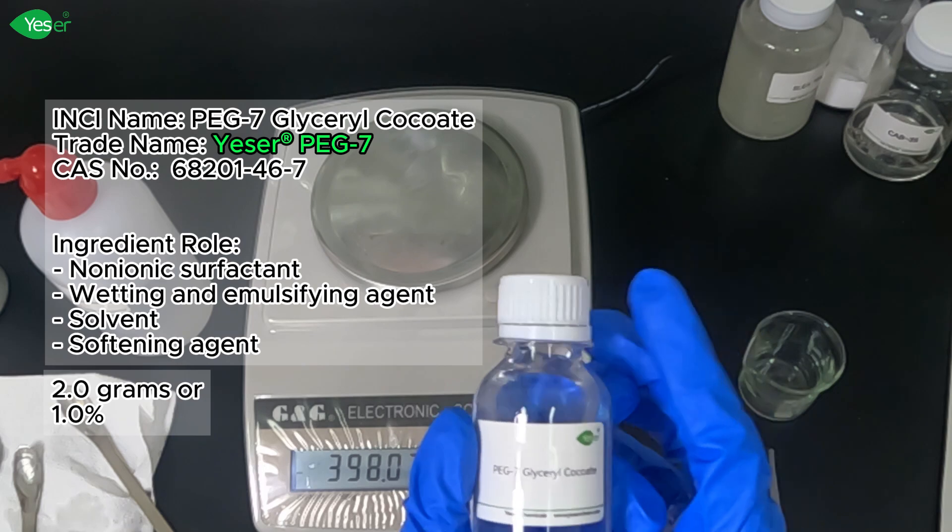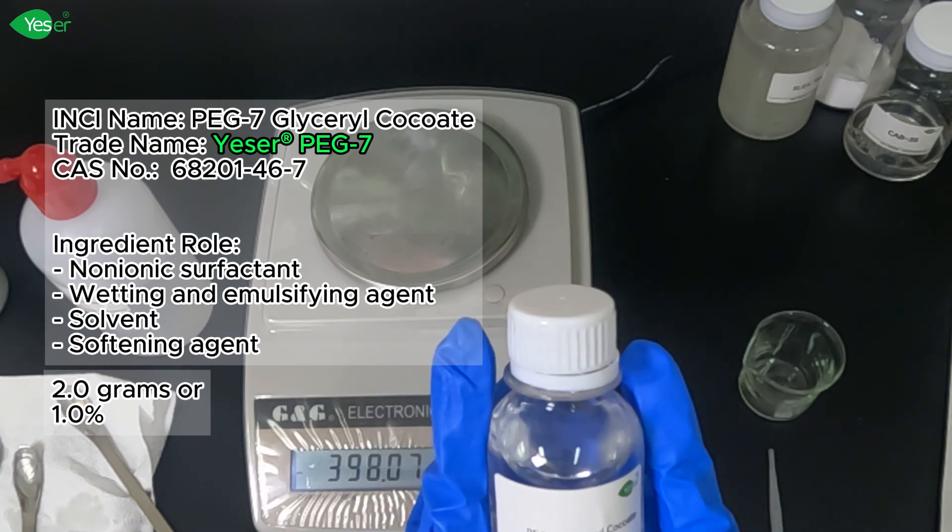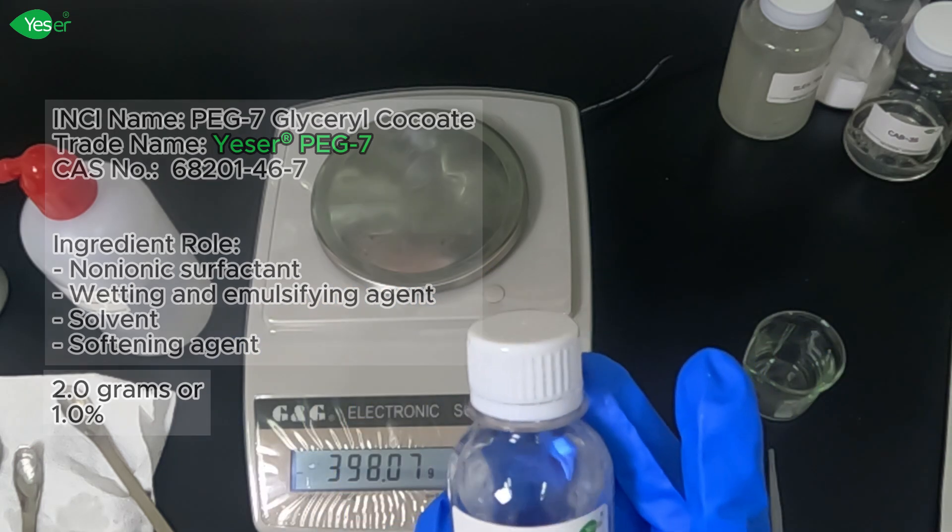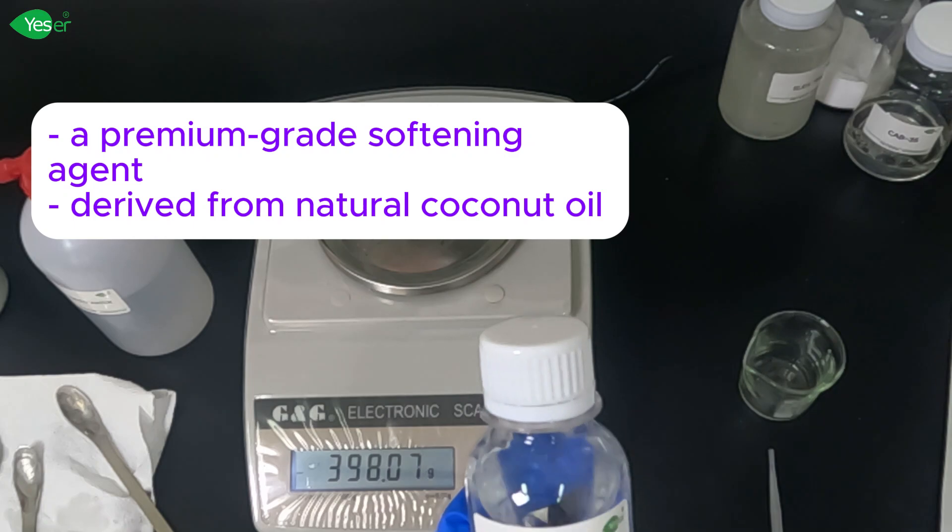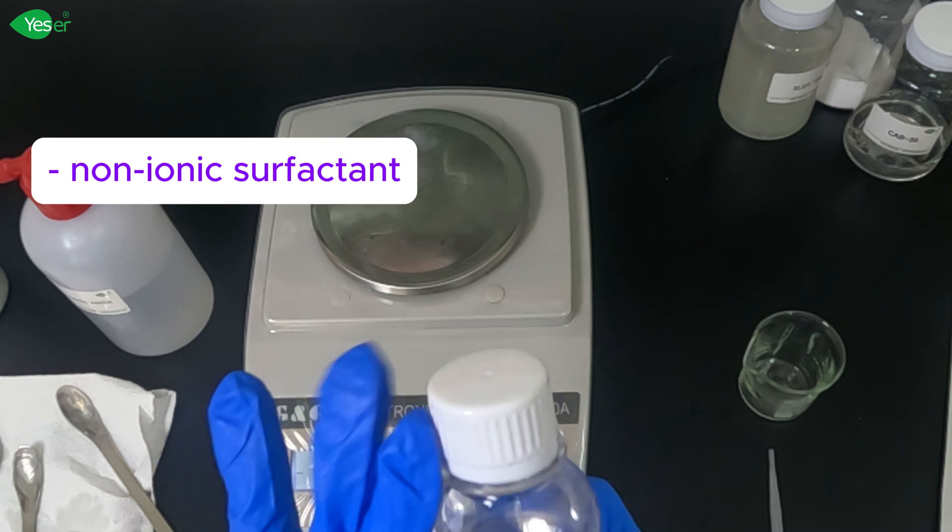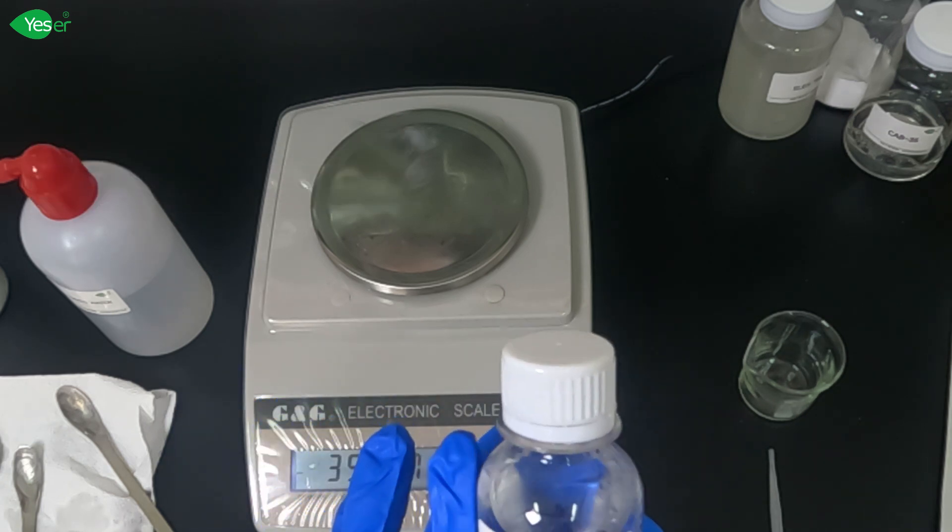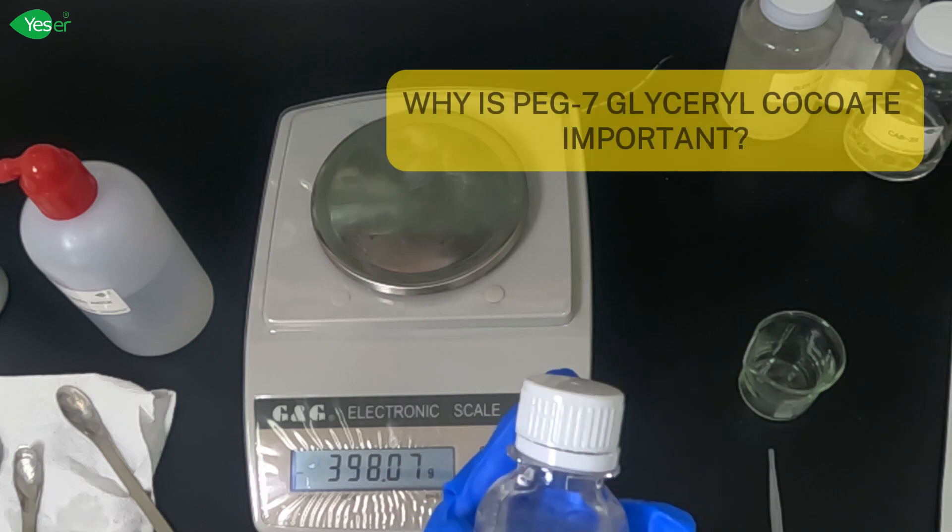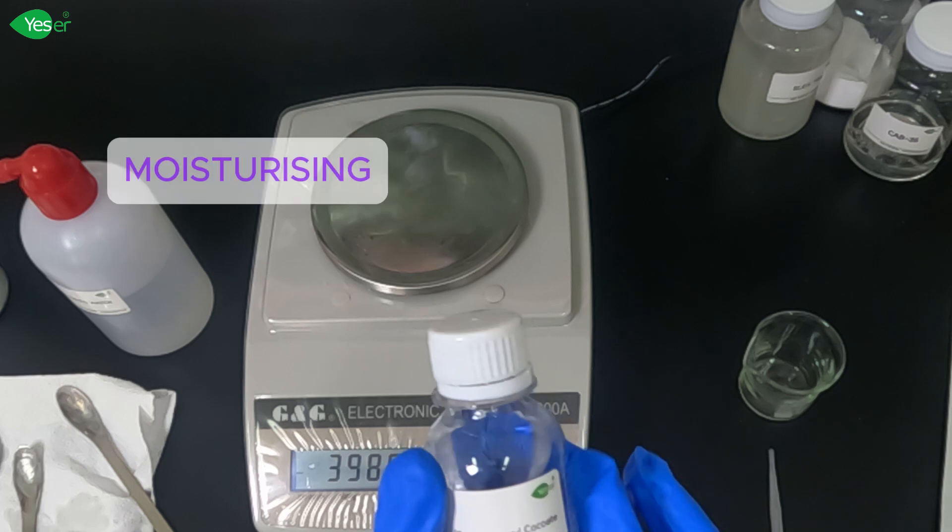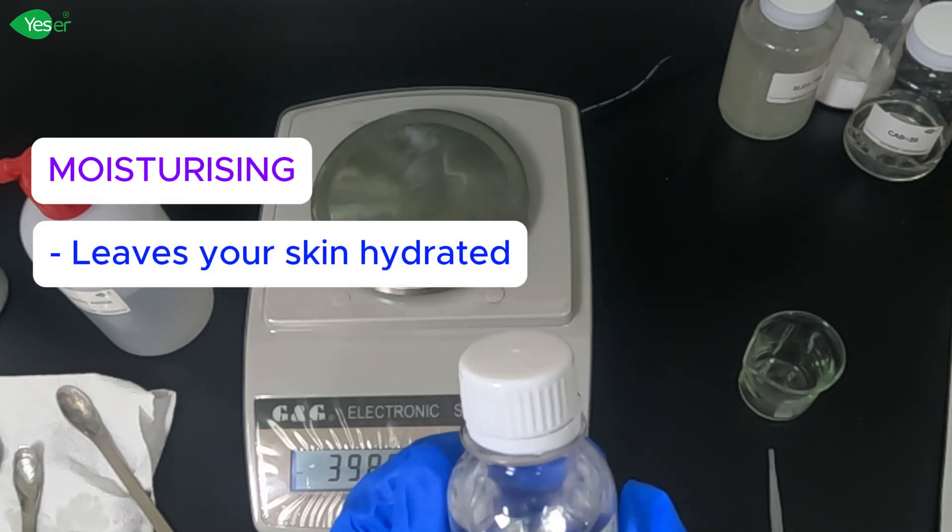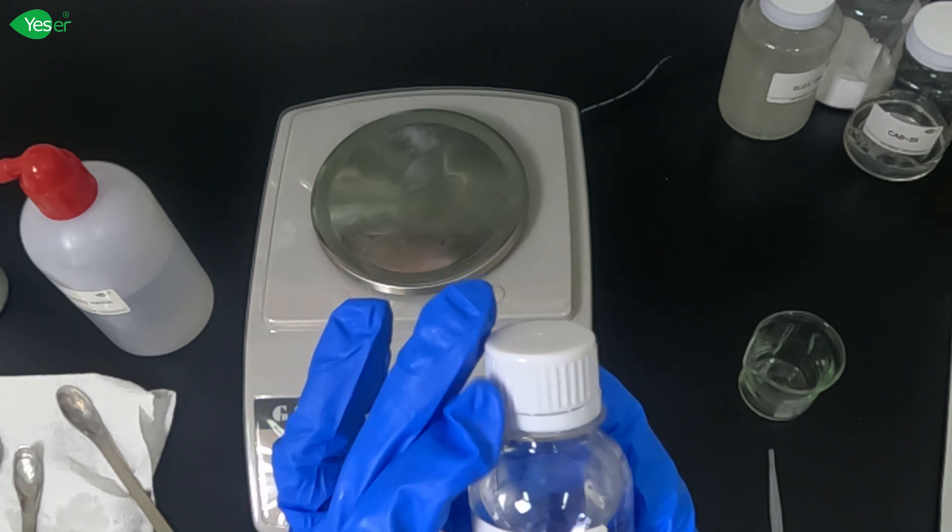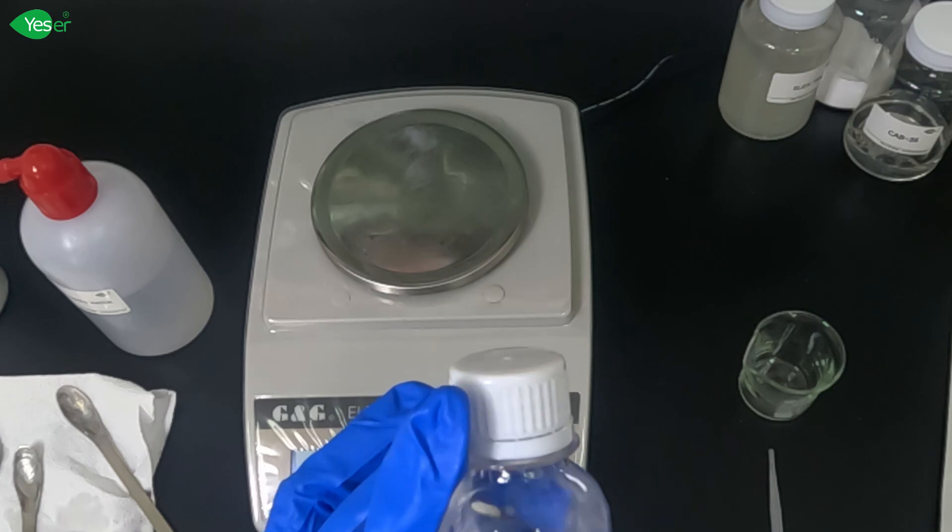Next, our featured chemical for this formulation, we have PEG7 glyceryl cocoate. Let me share with you the benefits of our featured product. This chemical is a premium grade softening agent derived from natural coconut oil. This is a non-ionic surfactant known for its ability to gently cleanse the skin without stripping away its natural oils, just like glycerin. Why is PEG7 important? First is its moisturizing properties. PEG7 helps to lock in moisture, leaving your skin hydrated long after you rinse off. This is especially effective in maintaining the skin's moisture barrier, making it ideal for dry and sensitive skin types.